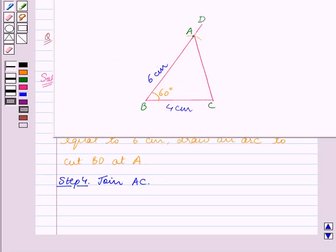Thus we have constructed triangle ABC in which BC is equal to 4 cm, AB is equal to 6 cm, and angle B is equal to 60 degrees. Therefore, triangle ABC is the required triangle.